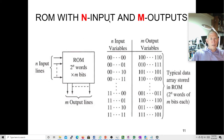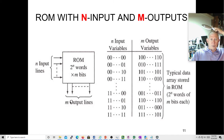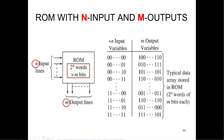A ROM with N inputs and M outputs: if you have N input variables, you're going to have 2-to-the-N rows or words. You have N address lines and 2-to-the-N rows. If you have M output lines, your words are M bits wide.